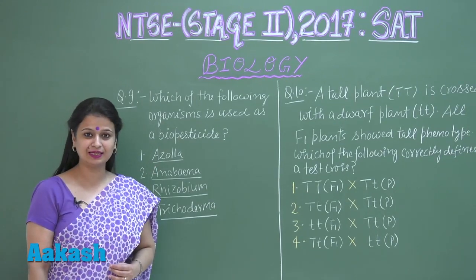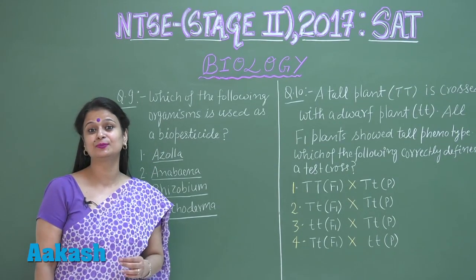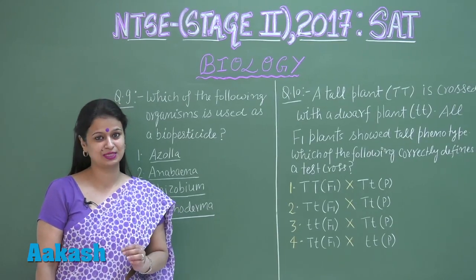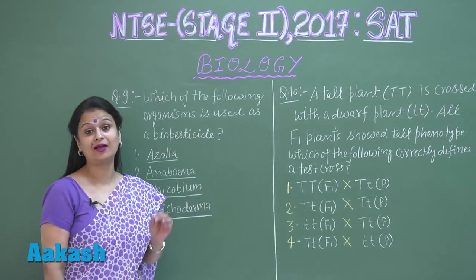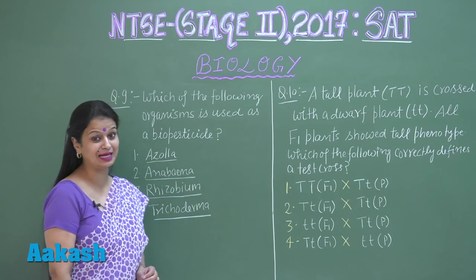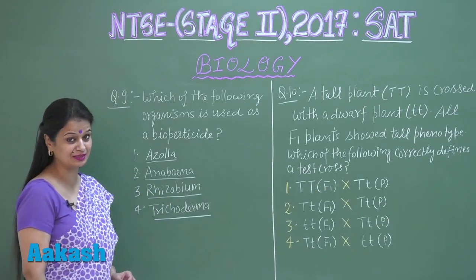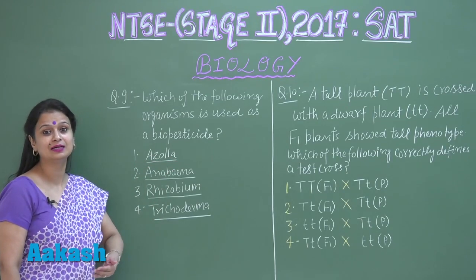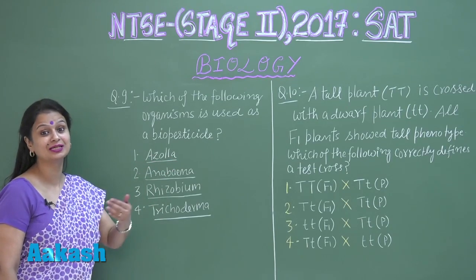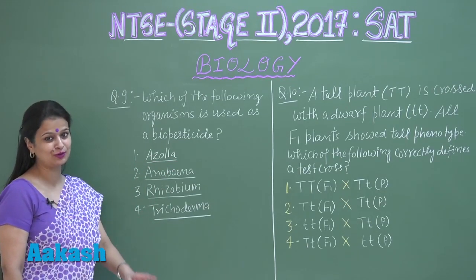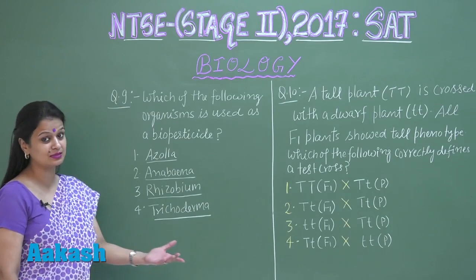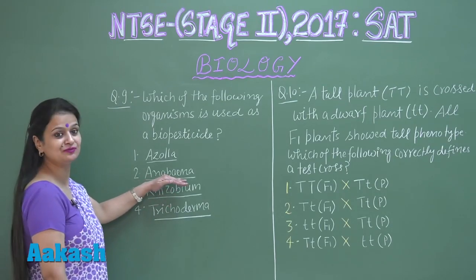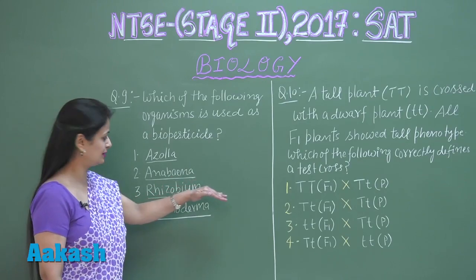This aquatic fern has a symbiotic association with Anabaena, and Anabaena is involved in nitrogen fixation. So Azola can be used for increasing the nitrogen content — it is not a biopesticide, it is a bio fertilizer. The same is the condition with Anabaena, which is also a nitrogen fixer.